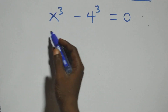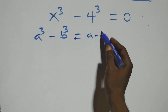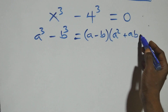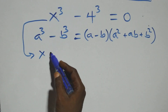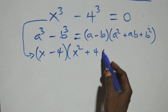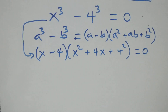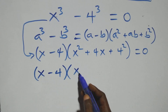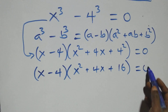Now solving from the second case using the difference of cubes identity: a cubed minus b cubed equals a minus b, times a squared plus ab plus b squared. So x cubed minus 4 cubed becomes x minus 4, times x squared plus 4x plus 4 squared, which is 16. This expression equals to 0.